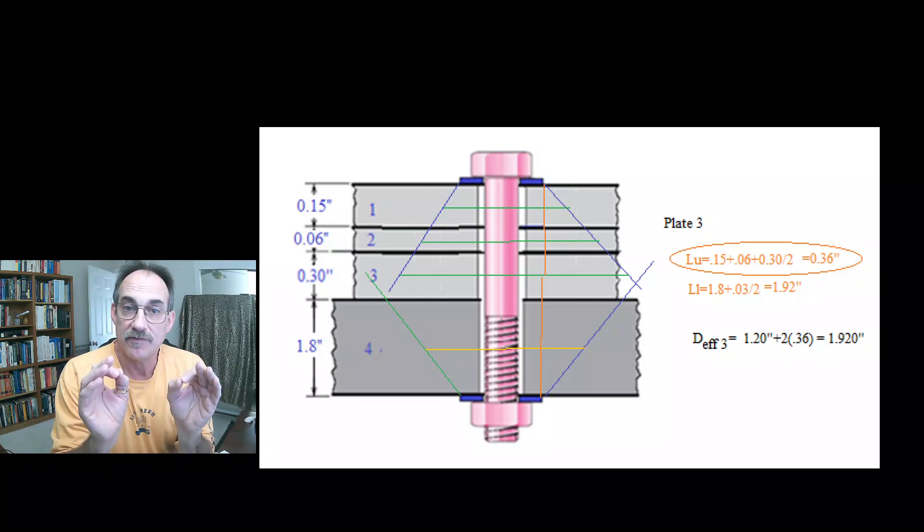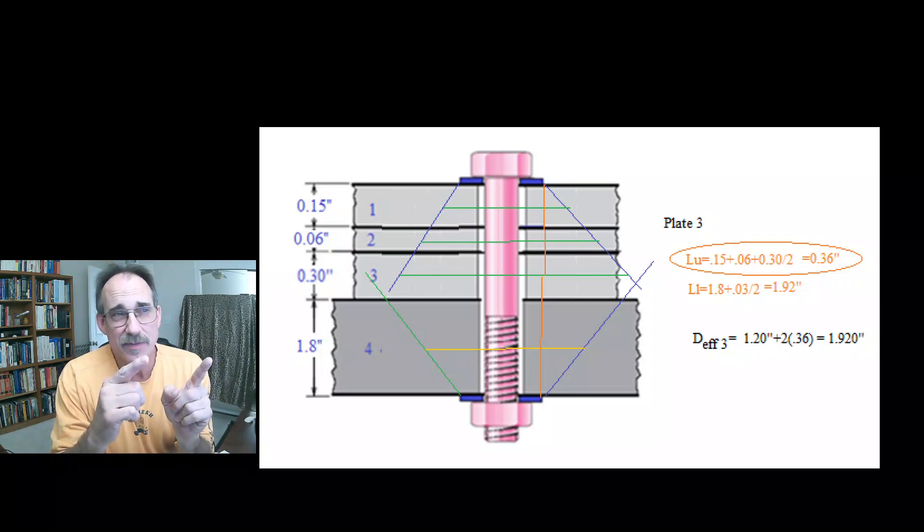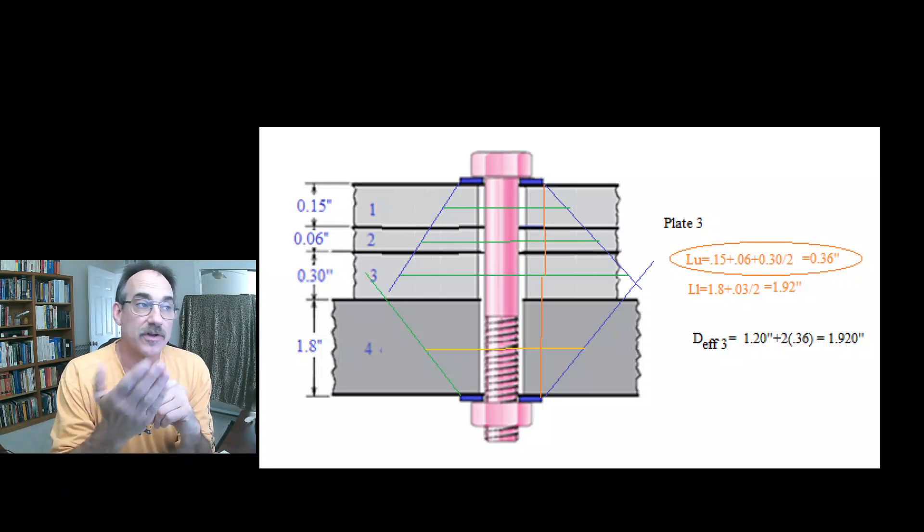Our key procedure is to figure out which washer the center of each plate is closest to, and we can use this proximity factor, which I'm calling L here, to calculate that. For some of these, it's going to be obvious. It's obvious that plate one is closer to the upper washer. It's obvious that plate two is closer to the upper washer. Not quite so obvious for plate three, is it from the upper or lower?